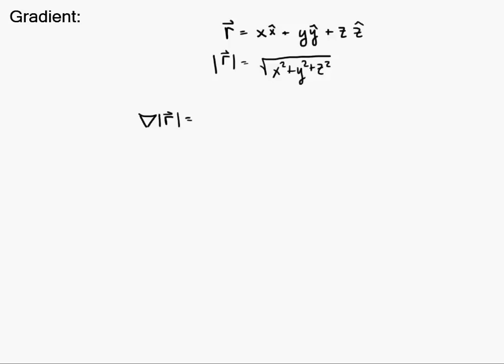Alright, this is another example using the gradient and this is something we might do in science. So if we have a position vector described as x in the x direction plus y in the y direction and z in the z direction, and we have the magnitude of that vector would be just the square root of x squared plus y squared plus z squared, just using the distance formula.